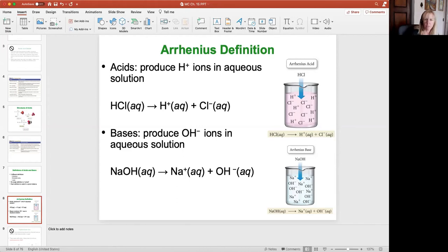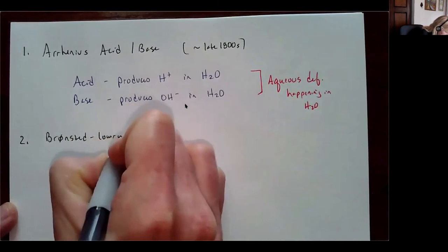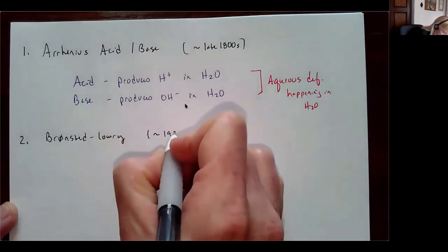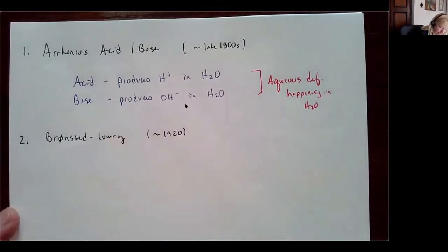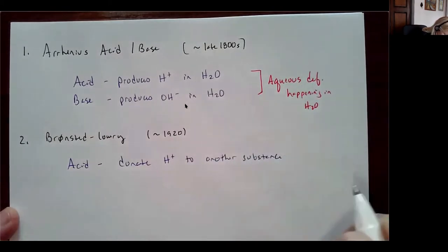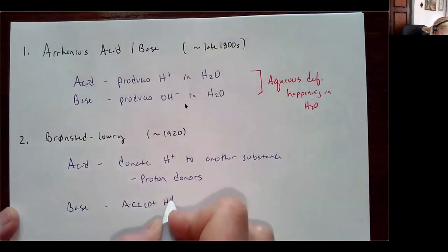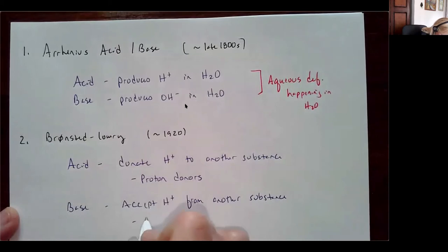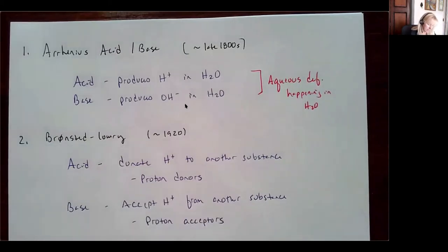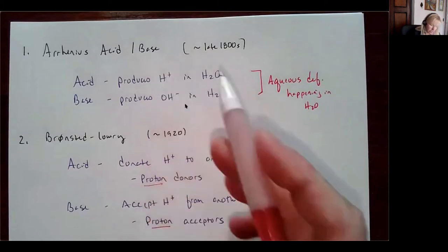Our second definition is the Bronsted-Lowry definition — a broader definition named after two scientists, introduced in the 1920s. In Bronsted-Lowry, an acid is something that donates hydrogen ions to another substance — we call these proton donors. A base is the opposite — it accepts hydrogen ions from another substance, making it a proton acceptor. The term 'proton' is used interchangeably with H⁺ because hydrogen only has one proton, one electron, and zero to two neutrons depending on the isotope.